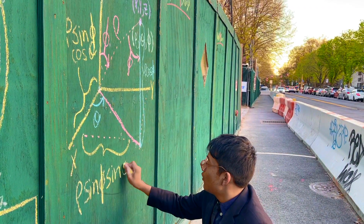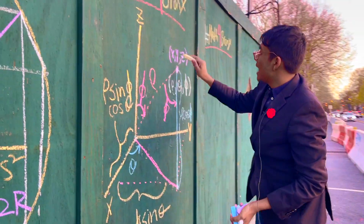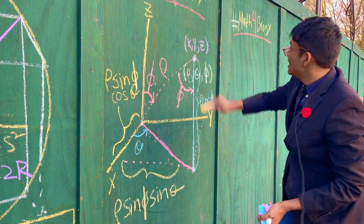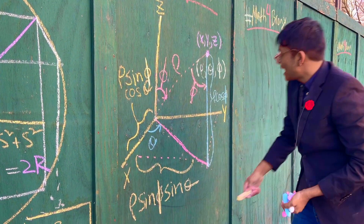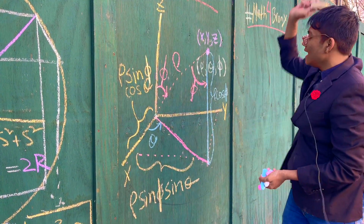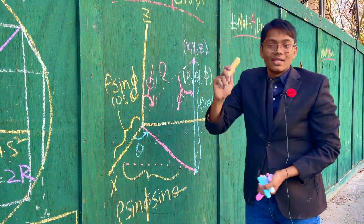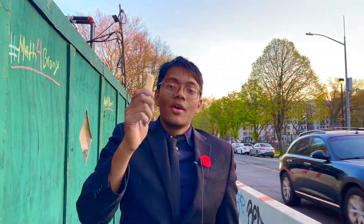And now we are done. We have transformed x into rho sine phi cosine theta, y into rho sine phi sine theta, and z into rho cosine phi. Thanks for watching this episode of Maths for Bronze. We'll check you out in the next one.